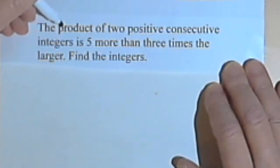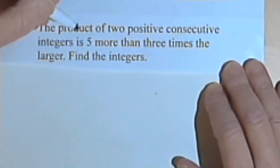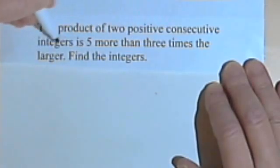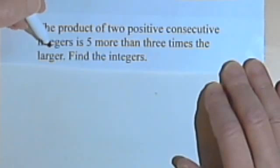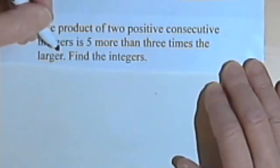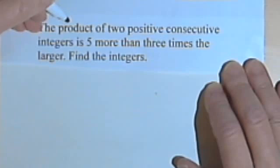The first step is to make sure we understand the words. Product, of course, means what you get when you multiply two quantities. Consecutive integers—integers are whole numbers like 9, 10, 11, and 12. And consecutive means one comes after the other. So 9 and 10 would be consecutive integers. 27 and 28 would be consecutive integers.